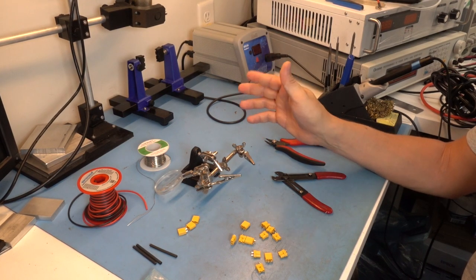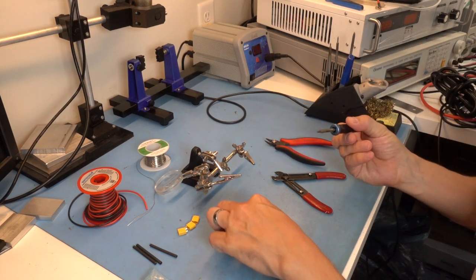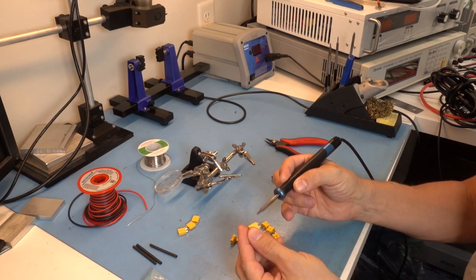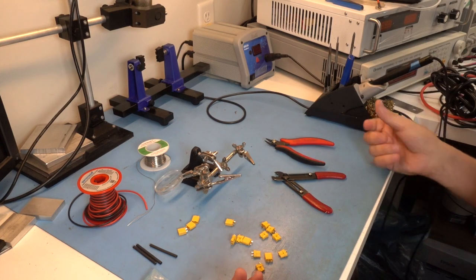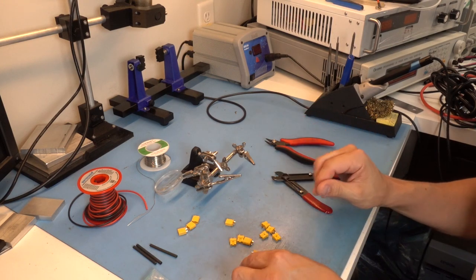As long as the tip you have is appropriately sized—for this, the tip is approximately the width of the terminal, which is about the correct size for this operation. A little bit smaller is probably okay. Bigger can be tough because you'll melt the plastic.